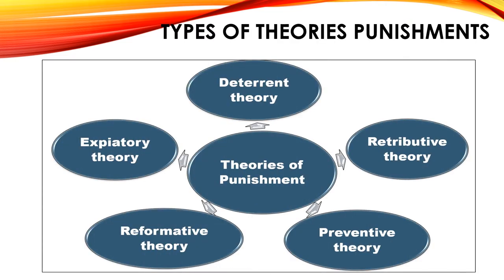There are five types of theories of punishment. First is deterrent theory. Second, retributive theory. Third, preventive theory. Fourth, reformative theory. And fifth is expiatory theory.